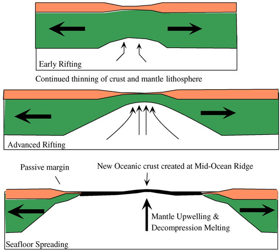Once a mid-oceanic ridge forms and seafloor spreading begins, the original site of rifting is separated into conjugate passive margins. For example, the eastern US and NW African margins were parts of the same rift in early Mesozoic time and are now conjugate margins. The margin migrates away from the zone of mantle upwelling and heating, and cooling begins. The mantle lithosphere below the thinned and faulted continental-oceanic transition cools, thickens, increases in density, and thus begins to subside. The accumulation of sediments above the subsiding transitional crust and lithosphere further depresses the transitional crust.